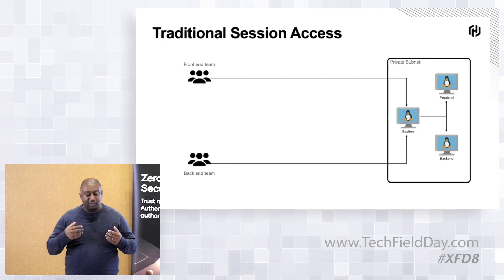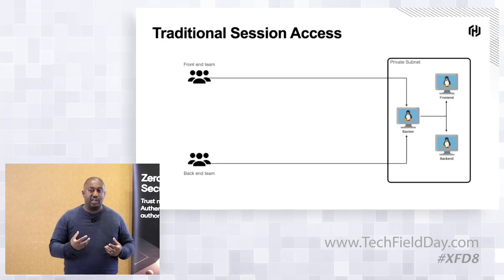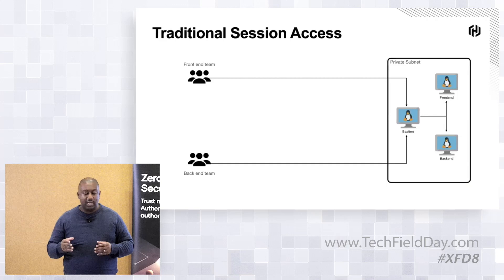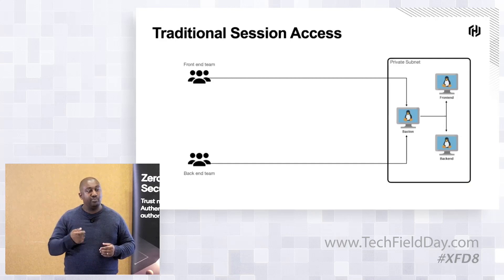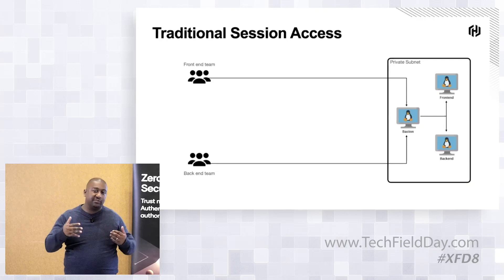When we think about the role that Boundary is playing here, it's really trying to solve that challenge of how do we provide humans access to our infrastructure in a very controlled, targeted, and governed way? How can we see what sessions have happened? How can we control which people can connect to which machines? We're talking about network connectivity here, not the whole authentication piece in terms of accessing the database itself.